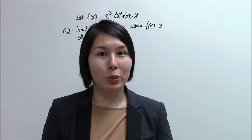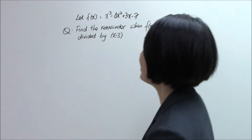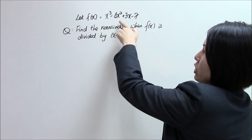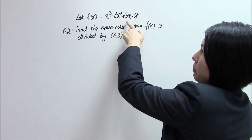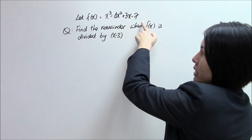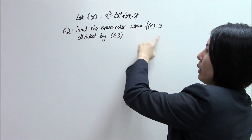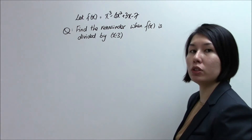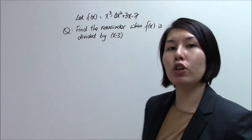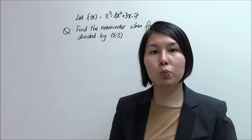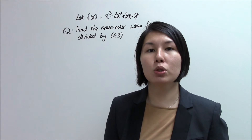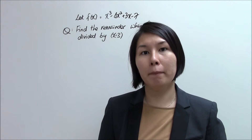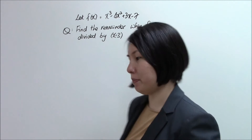Let us take a look at this question. Let f(x) equal x cubed minus 4x squared plus 3x minus 7. Find the remainder when f(x) is divided by x minus 3. In order to find this remainder, the fastest way is for us to apply the Remainder Theorem. But what is the Remainder Theorem?